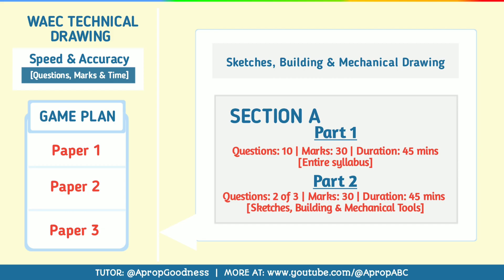Paper 3 is practical — covering sketches, building, and mechanical drawing. It has two sections: Section A and Section B. Section A has Part 1 and Part 2. Part 1 is not available for candidates in Ghana, while Part 2 is not available for candidates in Nigeria. For Part 1, you have 10 structural questions covering the entire syllabus, worth 30 marks for 45 minutes. For Part 2, you answer 2 questions out of 3, also worth 30 marks for 45 minutes, covering sketches of objects and components of tools used in building and mechanical workshops.